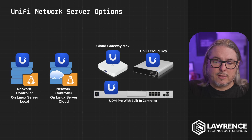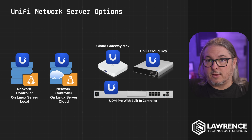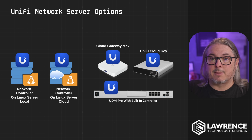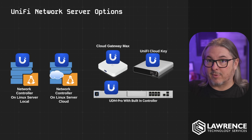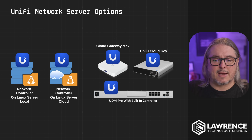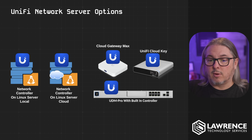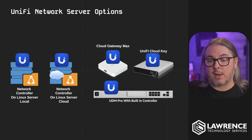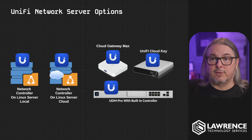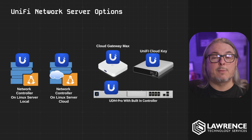Then there's the cloud key — a device where you can host the controller on it and it sets up automatically, right out of the box. You just go through the setup steps and you don't need a cloud connection for any of these. You can adopt them to their site manager, but you can set them all up locally. The cloud key works with devices such as access points and switches, but it only works with very specific firewalls such as the UXG. If you have a device like a Cloud Gateway Max or the UDM Pro with a built-in controller, the firewall will adopt automatically to that controller. That's an important nuance to remember.